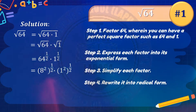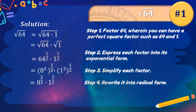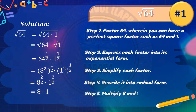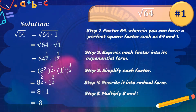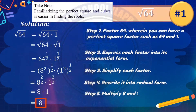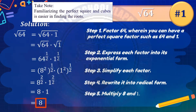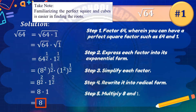Step 4: rewrite into radical form. Before rewriting, simplify the factors — you will have 8 raised to 2 over 2 times 1 raised to 2 over 2. Step 5: multiply 8 and 1, so 8 times 1 is 8. The final answer is 8 — the square root of 64 is 8. Familiarizing perfect squares and perfect cubes is easier when finding roots.